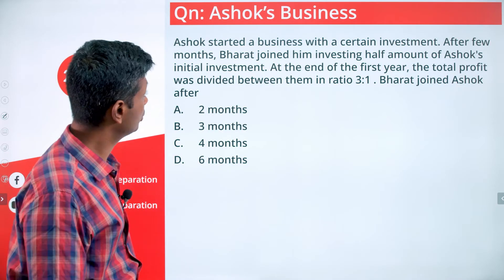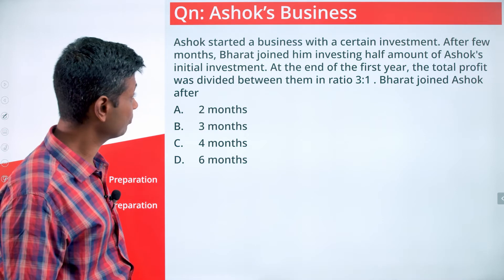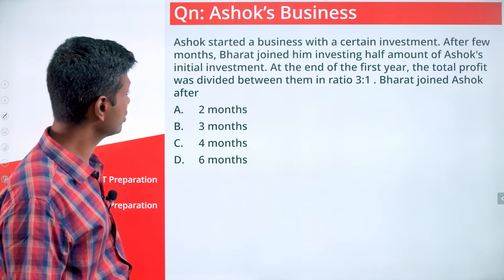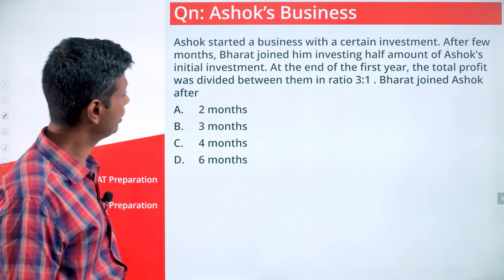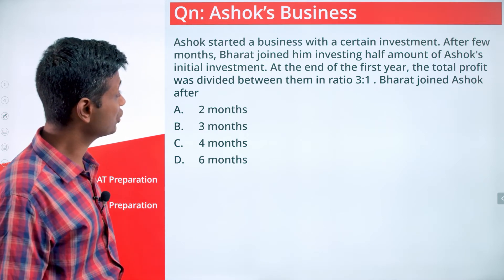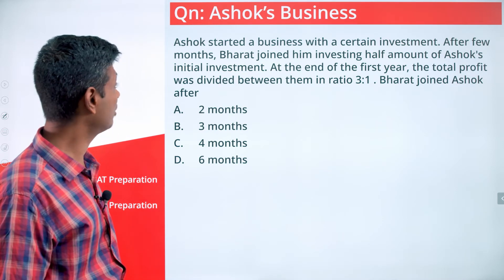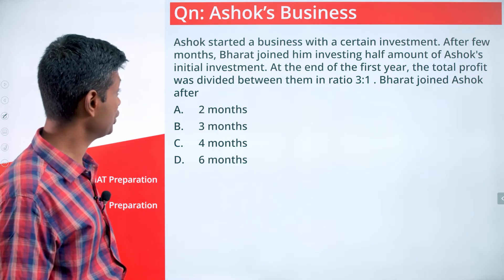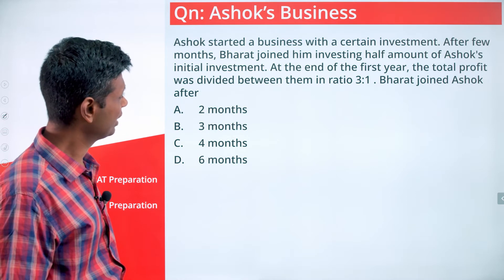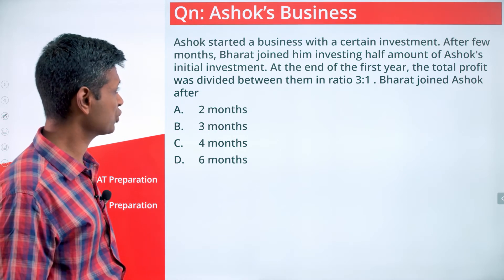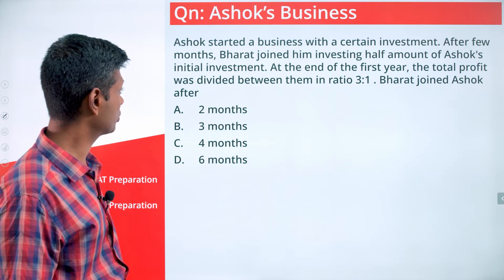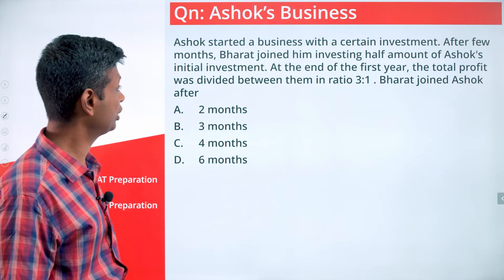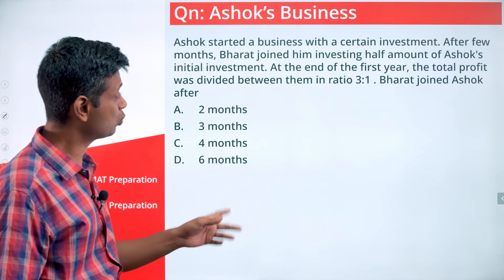Ashok started a business with a certain investment. After a few months, Bharat joined him, investing half the amount of Ashok's initial investment. At the end of the first year, the total profit was divided between them in the ratio 3 is to 1.